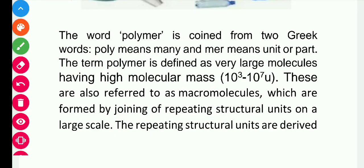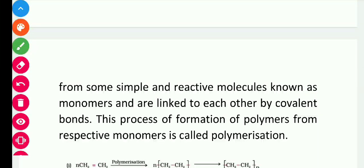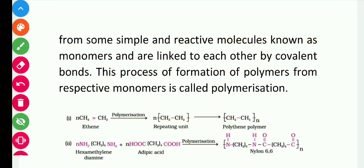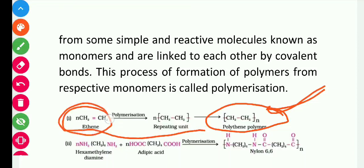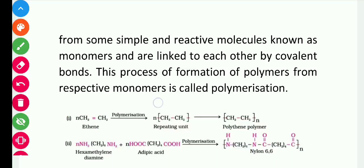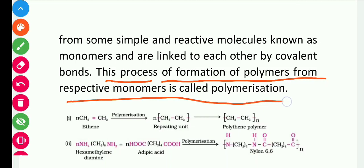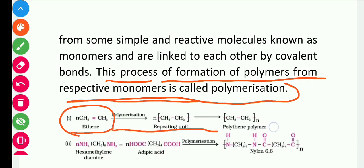The repeating structural units are derived from some simple and reactive molecules known as monomers. For example, consider polyethylene — it is a polymer with high molecular weight. It is formed with the help of small repeating units, that is ethene. Ethene is the repeating unit, and these small repeating units together form a large molecular weight molecule called a polymer. These monomers are linked by covalent bonds. The process of formation from respective monomers is called polymerization — the formation of polymers with the help of monomers.